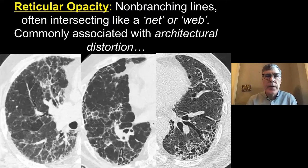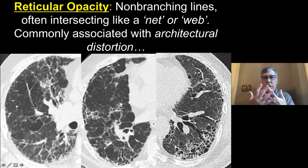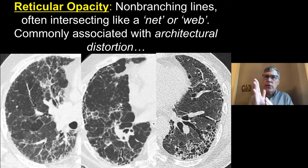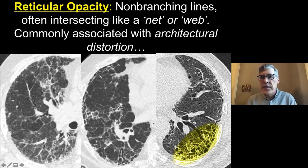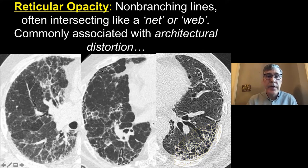That's the distortion. Reticulation is just intersecting lines — like a net or web of intersecting lines. We don't tend to see the so-called curvilinear interlobular septal thickening normally because the parenchyma gets so distorted that they get distorted too. You see these crisscrossing lines, often together with irregular visceral pleura and associated traction bronchiectasis. So reticulation is another morphologic sign of fibrosis.